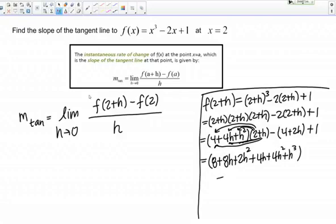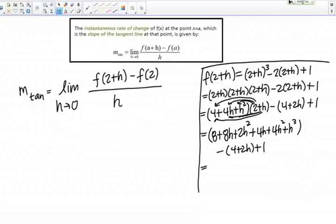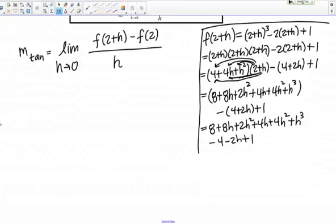Then I still have all these other terms, so minus the quantity 4 + 2h + 1. So let me rewrite these first pieces: 8 + 8h + 2h² + 4h + 4h² + h³. Now I'm going to distribute the subtraction sign to both terms within the parenthesis, so -4 - 2h + 1. So now that everything is all multiplied out and distributed, we can go ahead and combine terms.